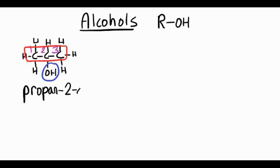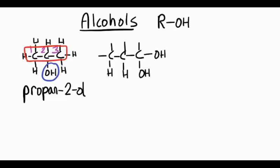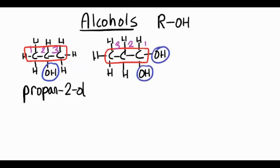That's a position isomer of propan-1-ol. Let's try another one with three carbons, but this time see what happens if we put two OH groups in. The prefix for two in organic chemistry is di. So with three carbons and two OH groups on the first carbon, keeping the numbers as low as possible, it's propan-1,1-diol, and the 1 and 1 show us where those two OH groups are.